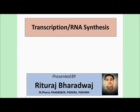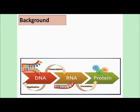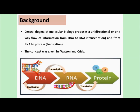We are going to start with transcription, also known as RNA synthesis. We'll cover how transcription takes place in prokaryotes and eukaryotes, the steps involved, and the enzymes that play crucial roles. According to the central dogma of molecular biology, there is a unidirectional flow of information from DNA to RNA — this transfer is known as transcription — and from RNA to protein, known as translation. This concept was given by Watson and Crick.